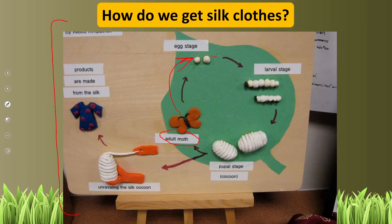Us ke baad they grow up into larval stage aur us ke baad yeh patte khaate hain. Aur us ke baad dee turn into pupal stage — cocoon stage hoti hai jis mein yeh apne ird-gird jo hai woh apne mooh se nikalne wala silk thread hoti hai woh lapet lete hain.